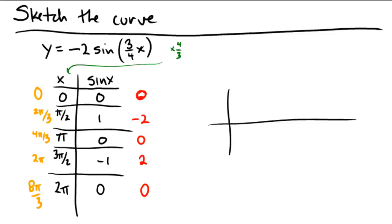So I care about 0, 2π/3, 4π/3, 6π/3 — which is 2π — and then 8π/3. You can notice the convenient counting when you're compressing or stretching by the same factor.